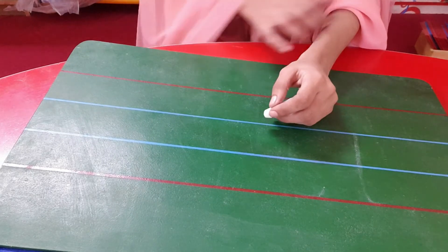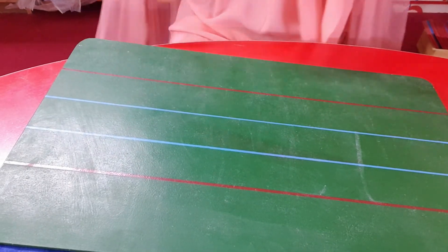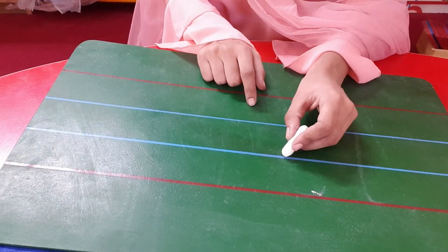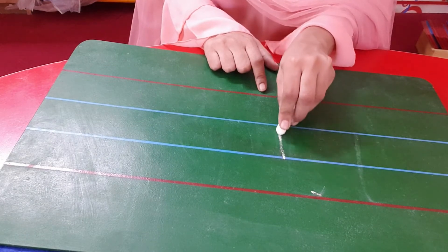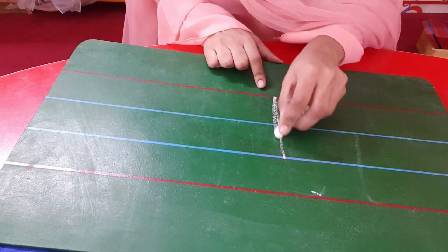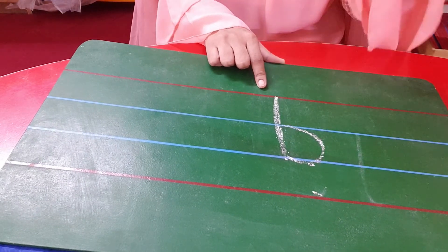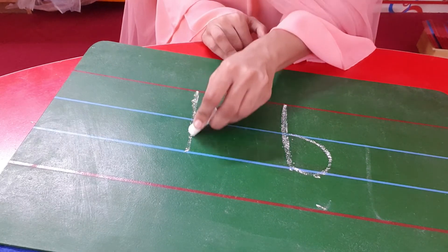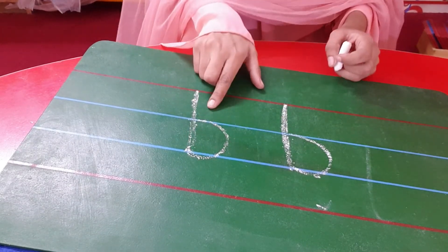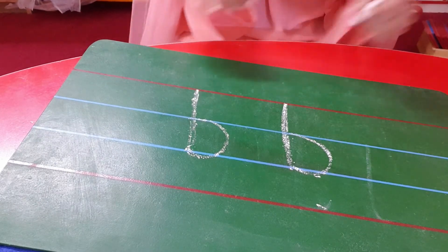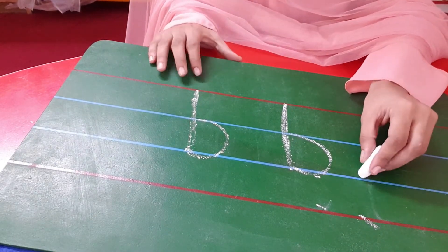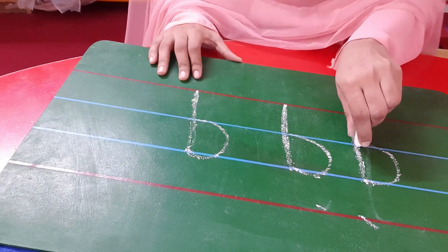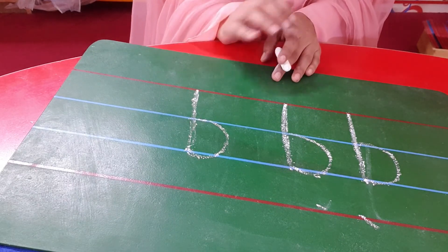Pa is down and down. We will write this in three lines. We have four lines in a copy, so leave the first line and start from the second line. Pa is down and down, go up, turn around. Write it again — pa is down and down, go up, turn around. We write 'pa' in three lines, leaving the first line and starting from the second line.